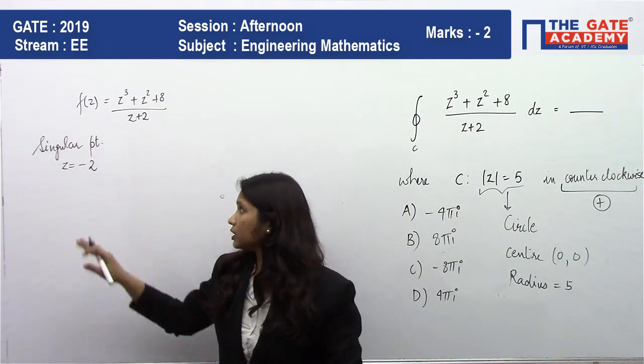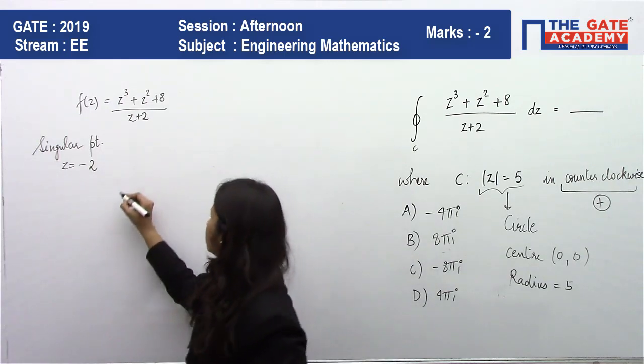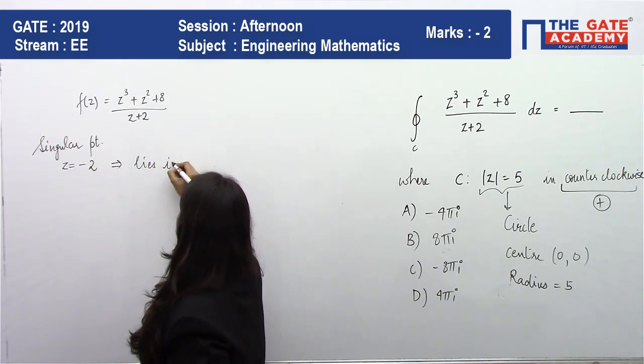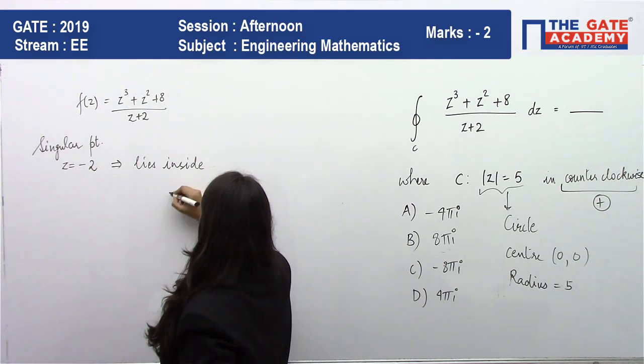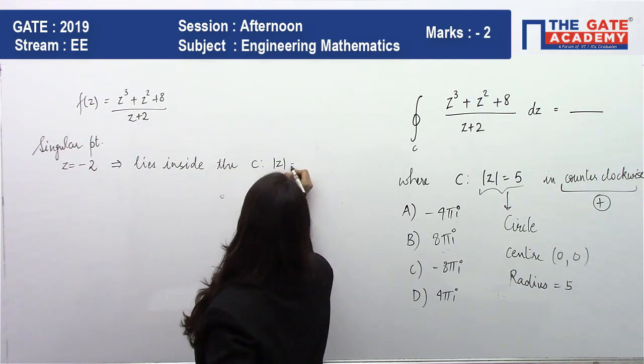And if you look at this singular point and this contour which has been given, you will see that this point lies inside the contour. This point lies inside the contour, that is |z| = 5.